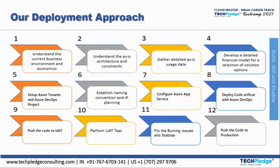After the detailed financial model, step five is to set up the Azure tenants and Azure DevOps project. After that, we establish naming conventions and IP planning — a proper naming convention and IP planning should be in place. Then we configure our Azure App Service — the Azure App Service configuration should be done.